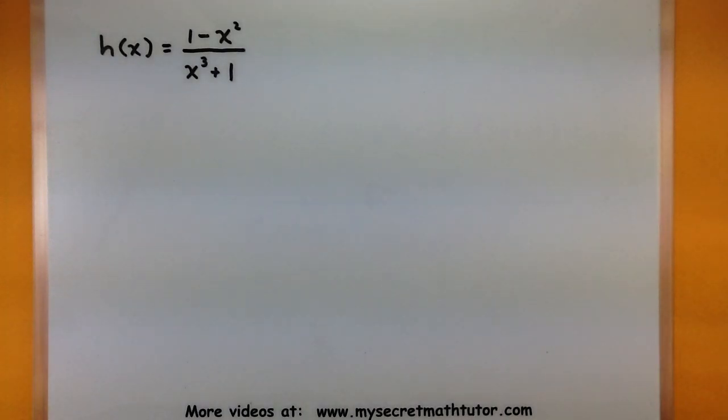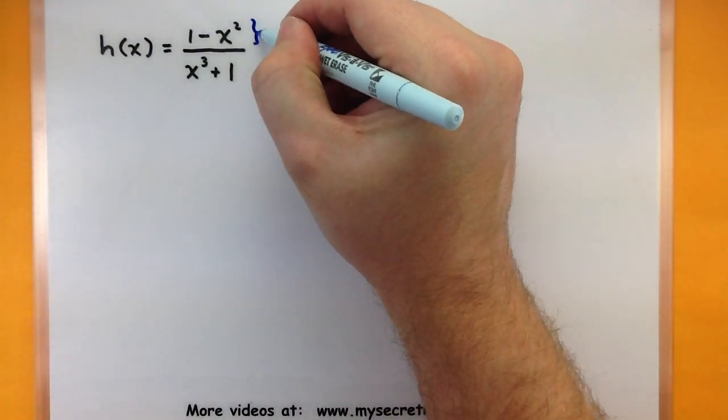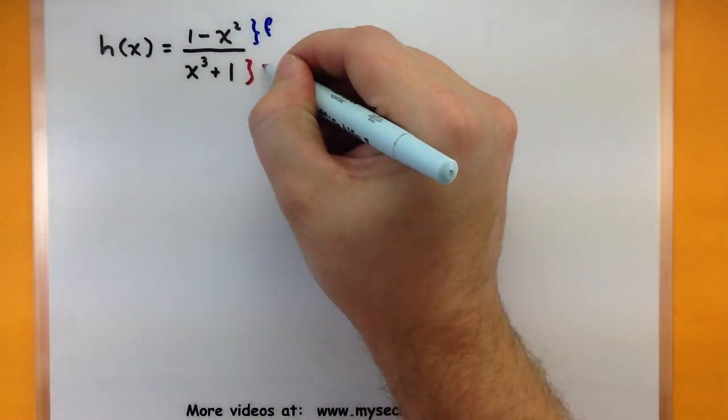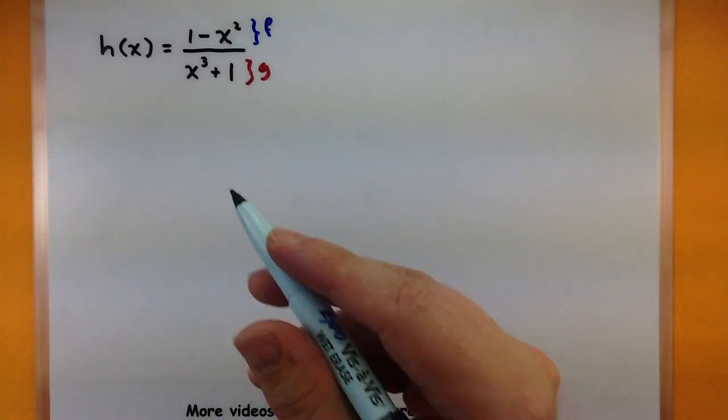Alright, so we want to find the derivative of 1 minus x squared all over x cubed plus 1. So think of this as our top function f, and we'll call the other one our bottom function g. Alright, now let's do a little bit of extra work just to find these derivatives one at a time.